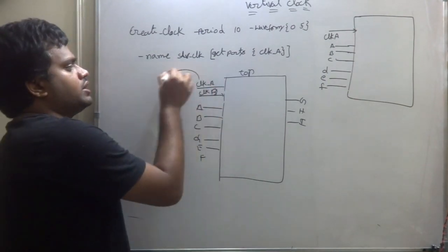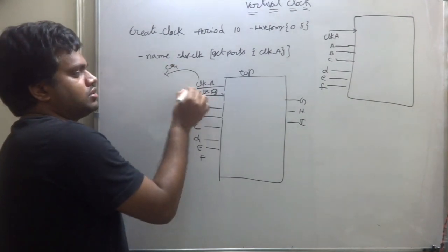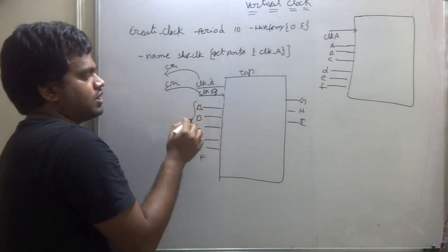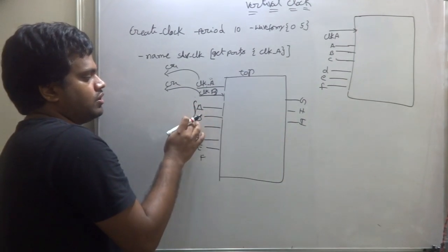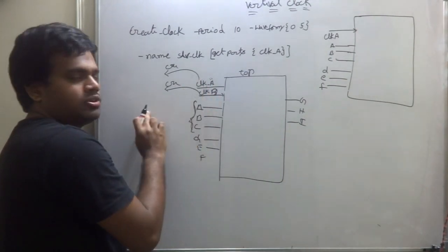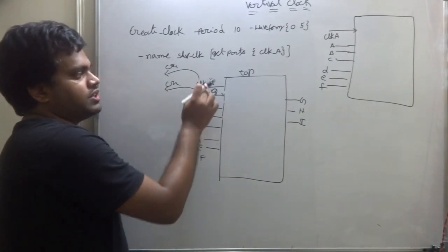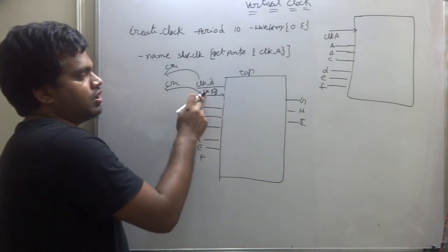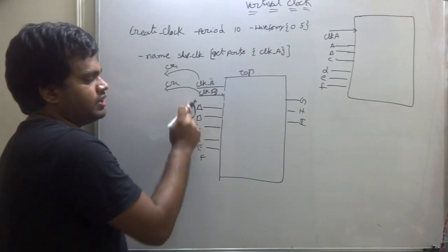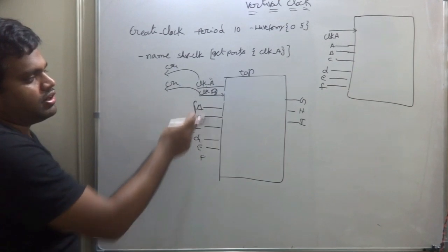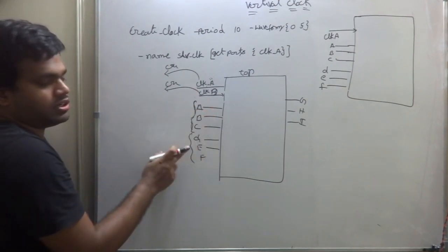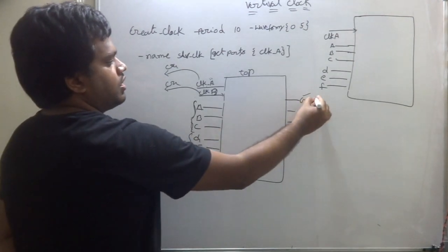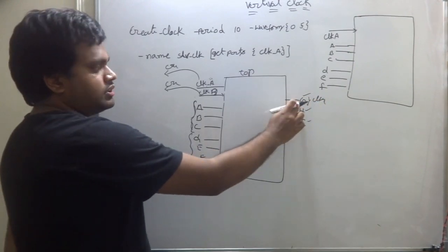To run synthesis, you have to write the create_clock constraint for clock A and clock B — what frequency each will work. Then, suppose A, B, C is working on clock A — you have to write the set_input_delay constraint for A, B, C with respect to clock A. Suppose D, E, F is working on clock B — you have to write set_input_delay for D, E, F with respect to clock B. For output G working on clock A, you have to write set_output_delay.